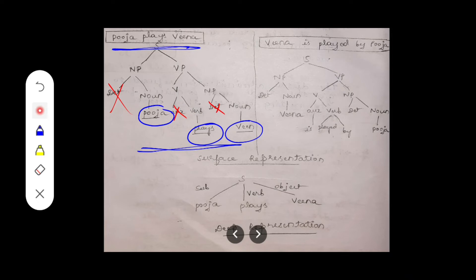If we convert the active voice sentence 'Puja plays veena' to passive voice, it becomes 'Veena is played by Puja.' To represent this in a tree structure: S is made up of NP and VP. In the sentence 'Veena is played by Puja,' the noun is 'veena,' and there is no determiner before it, so we drop the determiner.